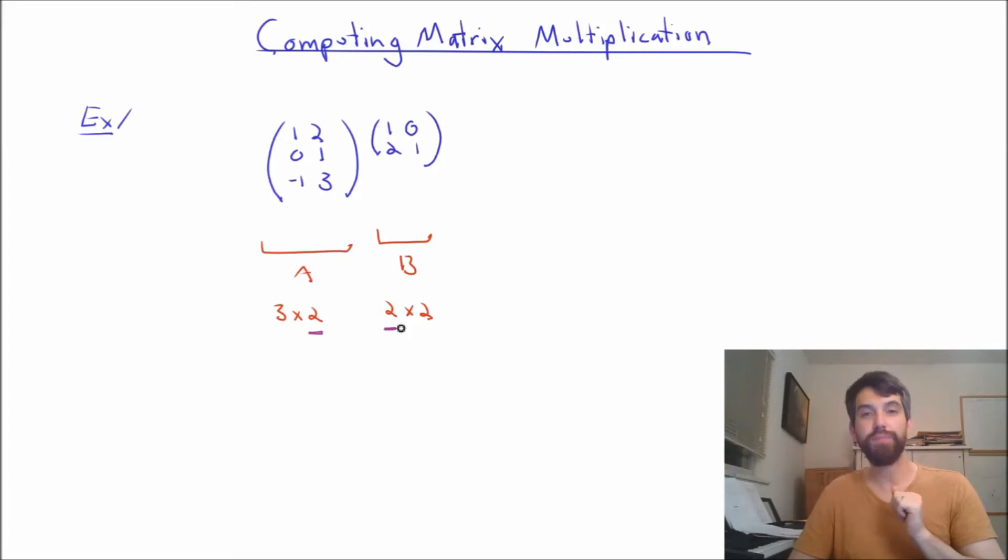And then the outcome of this, we can already anticipate before we do anything else, it's going to be a 3 by 2 matrix, and I get that by comparing this 3 and this 2. So let's try to figure out how we're going to do this.